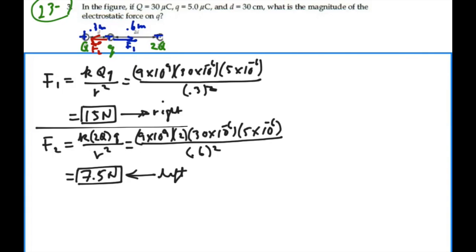So we have these two forces on little q, and force F1 is going to the right. It's 15 newtons. So our net force is going to be F1 minus F2, 15 minus 7.5.